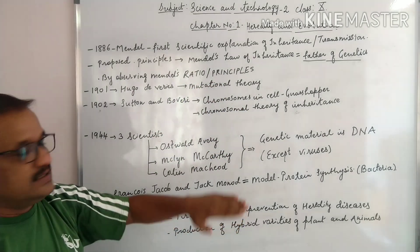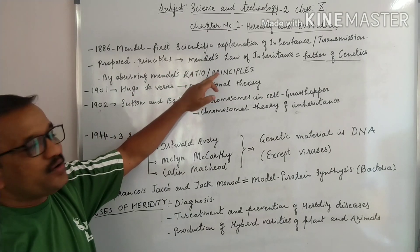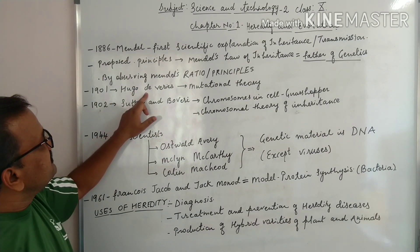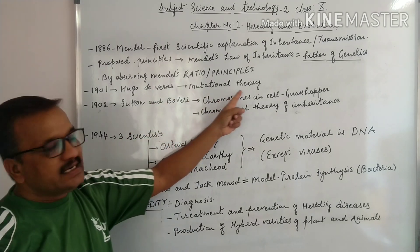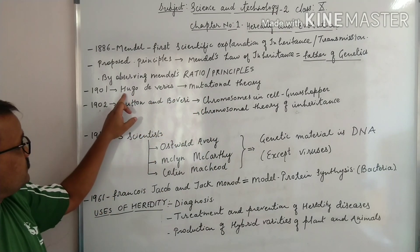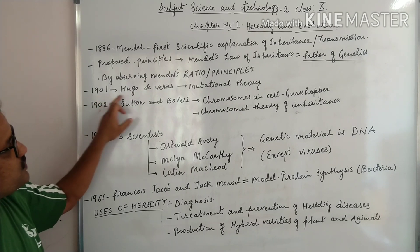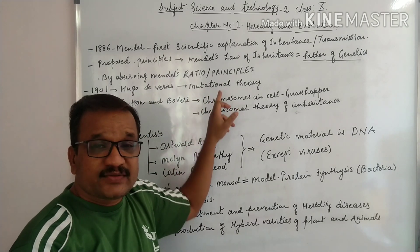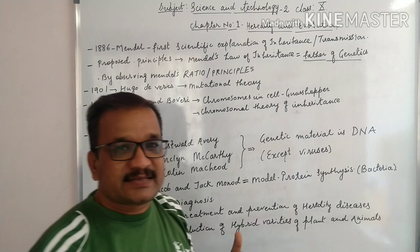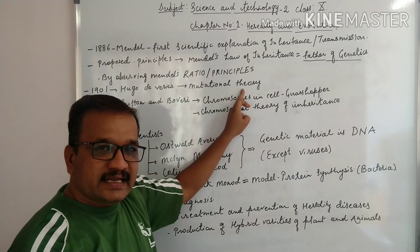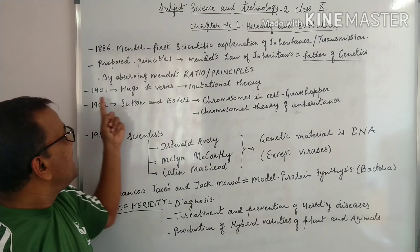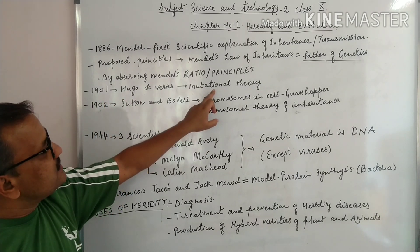Based on Mendel's ratios and principles, different scientists took up further study. In 1901, Hugo De Vries put forth the concept of mutation. Mutation means a sudden change, and this change takes place basically in the structure of DNA.